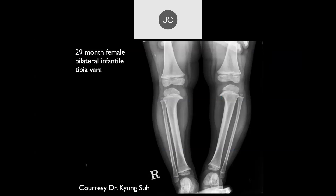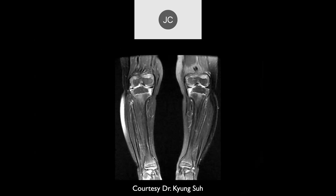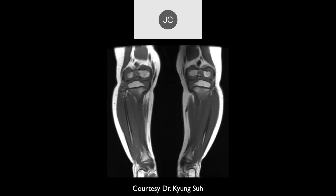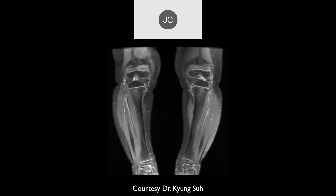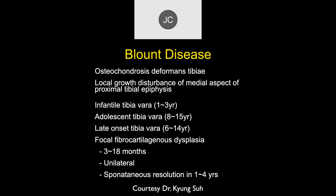In a 29-month-old female with bilateral infantile tibia vara, radiographs show prominence and peaking of the medial tibial plateaus symmetrically. On MR, increased signal extends through the growth plate into the metaphysis with hypertrophic bone formation causing beaking on both sides — cartilage extending into the metaphysis. This is Blount's disease, also called osteochondrosis deformans tibiae, thought to be a local disturbance in the epiphysis.